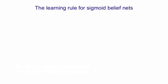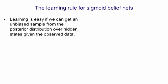Now before I go into ways in which we can try and get samples from the posterior distribution, I just want to tell you what the learning rule is if we could get those samples. So if we can get an unbiased sample from the posterior distribution over hidden states, given the observed data, then learning is easy.